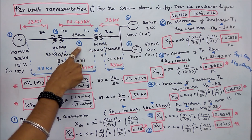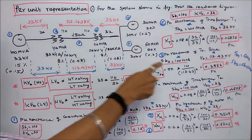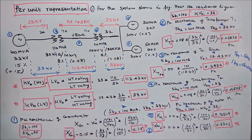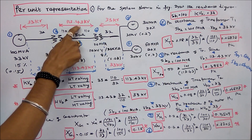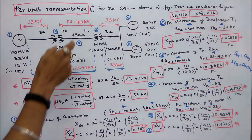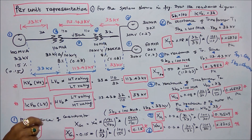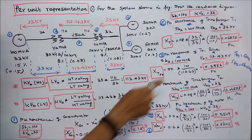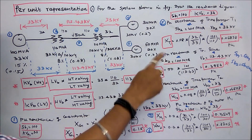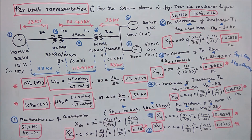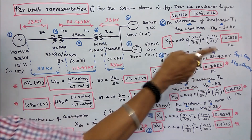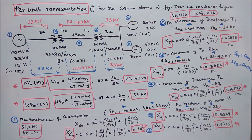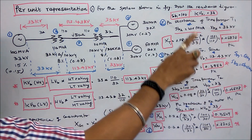The third is per unit reactance of the transmission line. SB2 is 100 MVA and base voltage is 113.43 kV — a very important point. Per unit reactance of the transmission line equals actual reactance value times SB2 divided by KVB2 squared. That is 50 into 100 divided by 113.43 squared, which equals 0.3886.